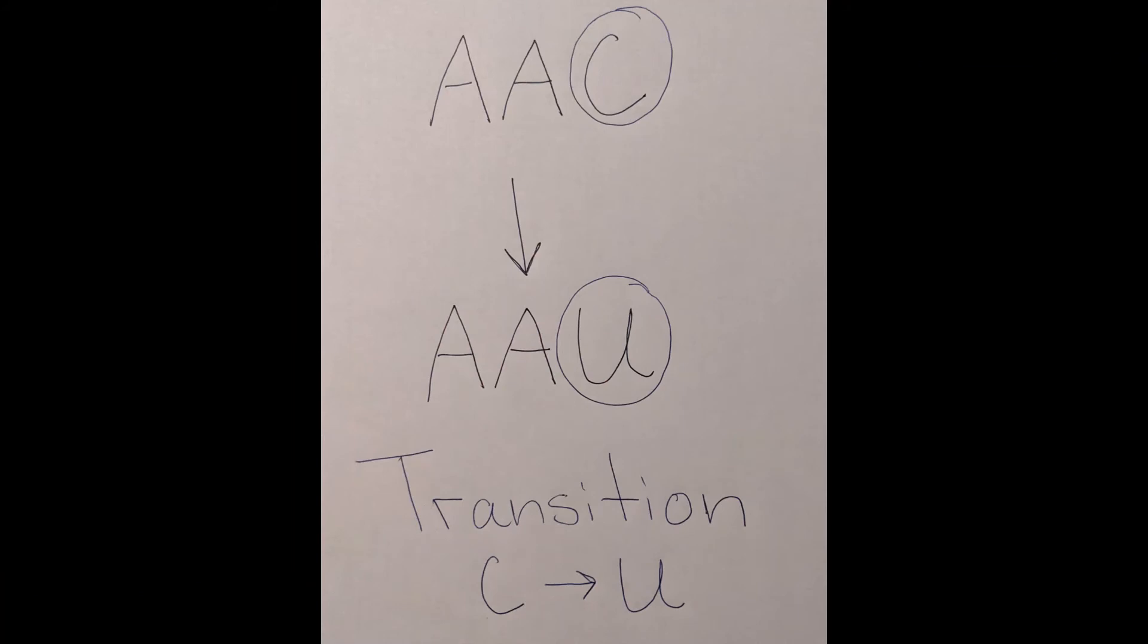In this mutation, you see that a cytosine is substituted for a uracil. This is a transition mutation because a pyrimidine was exchanged for a pyrimidine. The amino acid asparagine remains the same because there are two codons that translate for the amino acid. This allows the protein to maintain its original function.